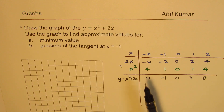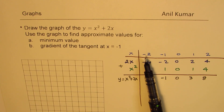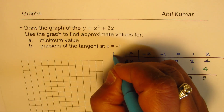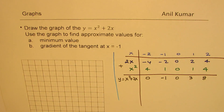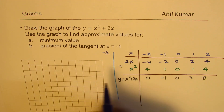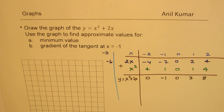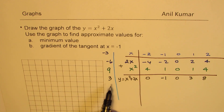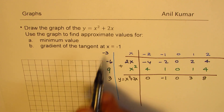It would be good to also take minus 3 as one of our values. So let's add minus 3. Minus 3 times 2 is minus 6. The square of minus 3 is 9. When you add them up, you get 3 for x equals minus 3.